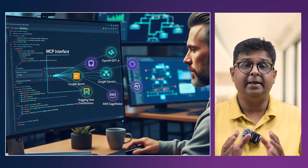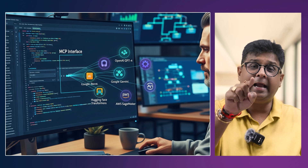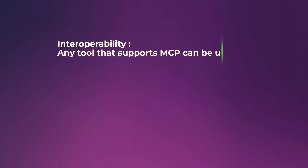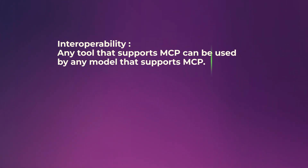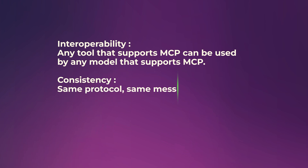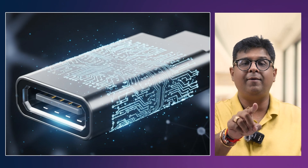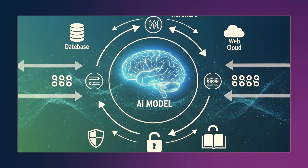With MCP, developers need to implement the interface once and any compliant model can talk to that tool safely. MCP delivers three key benefits: interoperability — any tool that supports MCP can be used by any model that supports MCP; consistency — same protocol, same method structure, and less confusion; and developer efficiency — write the interface once and use it everywhere. It is like USB-C for AI: the universal connector.